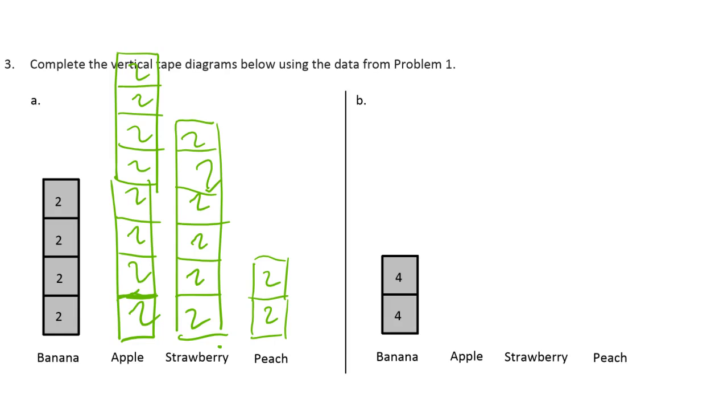Now we have units of four. There's eight bananas, right? And apples, there were 16 of them, so that's four fours. We need two more fours here. Strawberries were 12, and that's three fours. And I'm doing the same thing again. I just can't seem to help it. And peaches, there's just one four for those.